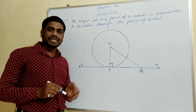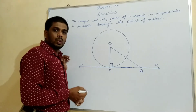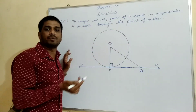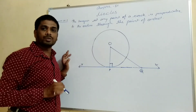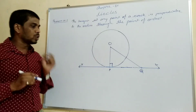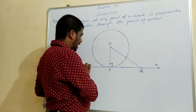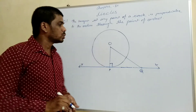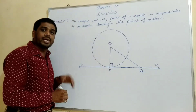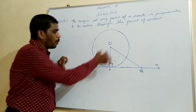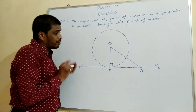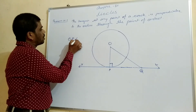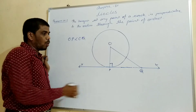We need to prove that OP is perpendicular to XY. Let us take another point Q on XY, other than P, which lies outside of the circle. If point Q were inside the circle, XY would become a secant. So Q lies on XY and outside the circle. In this case, the distance OP is smaller than OQ.